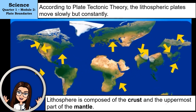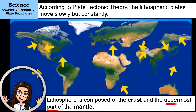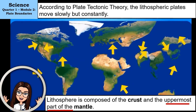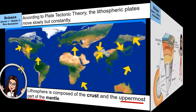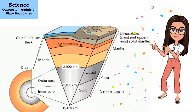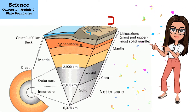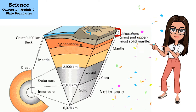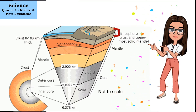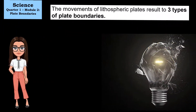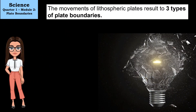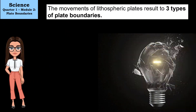The lithosphere is composed of the crust and the uppermost part of the mantle. This figure lets us see where the Earth's lithosphere is — this thin part is the lithosphere. The movement of the lithospheric plates results in three types of plate boundaries.